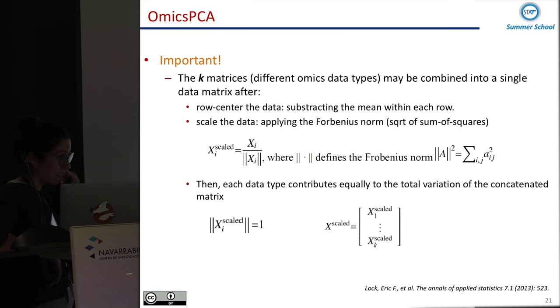Another important thing in the OmicsPCA, like in the normal PCA, you should scale and center. In that case, if we have data matrices with different number of features, we can apply a Frobenius normalization that makes each data type contribute equally to the total variation of the concatenated matrix. So each data set will have the same weight in the concatenated matrix.